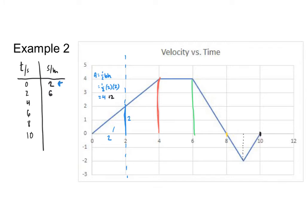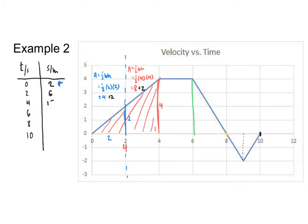Let's find the area at four seconds. That's this big triangle, which has a base of four and a height of four. Area equals one-half times base times height: one-half times four times four equals eight. Adding the initial two meters gives a position of ten meters after four seconds.